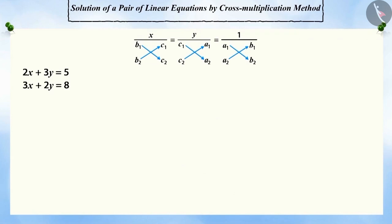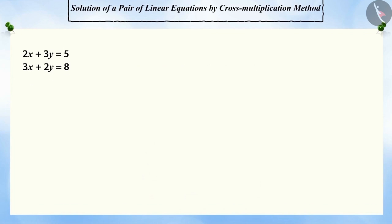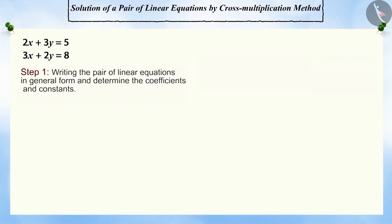Solving a pair of linear equations by cross-multiplication method takes four steps. In step 1, we write the equations in general form and determine the values of coefficients and constants.